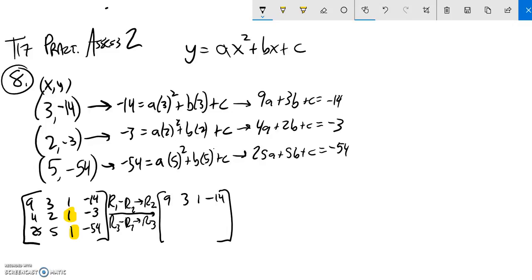Row 1 minus row 2, so 9 minus 4 is 5. 3 minus 2 is 1. 1 minus 1 is 0. And then notice negative 14 minus negative 3, it's negative 14 minus negative 3. So that's negative 11.